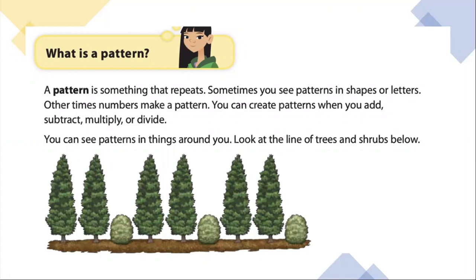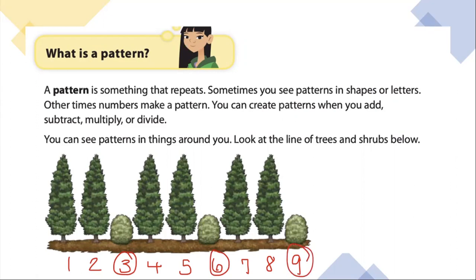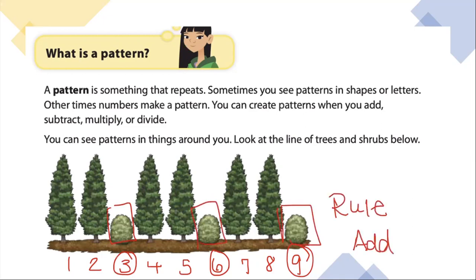Now, if I were to use a number pattern to identify the rule of this pattern, I would go ahead and number them: first tree, second, three, four, five, six, seven, eight, nine. Now I'm going to circle the numbers to identify my shrubs: three, six, nine. So the rule for my shrubs is that each shrub increases by three. For every two trees, I get a shrub. So the third figure will always be a shrub, which means that this rule is add three because all of the multiples of three will end up being a shrub.